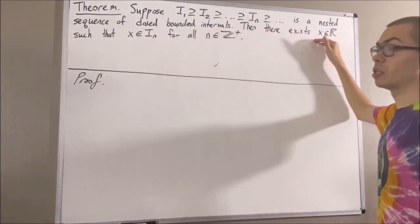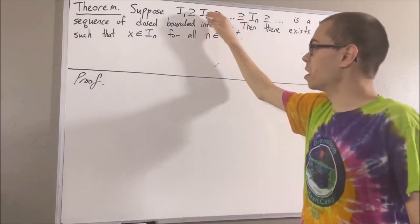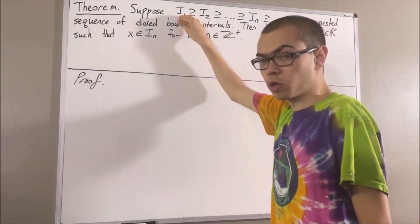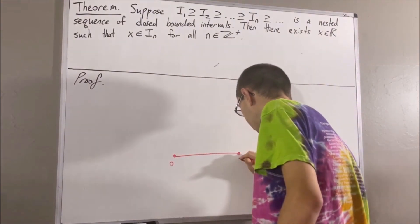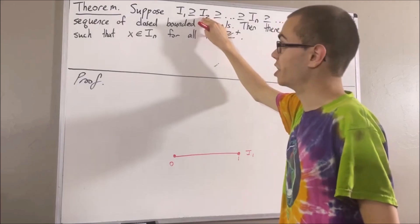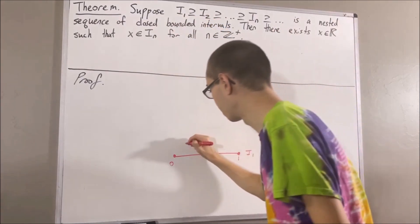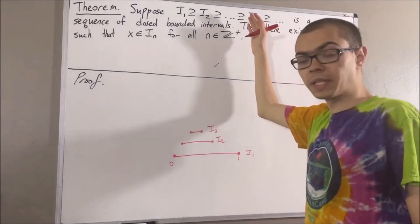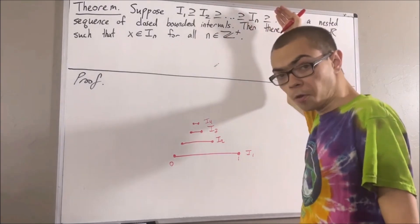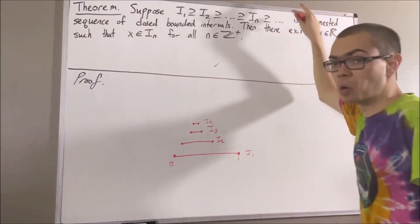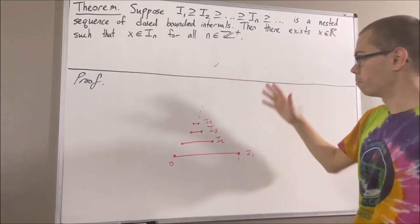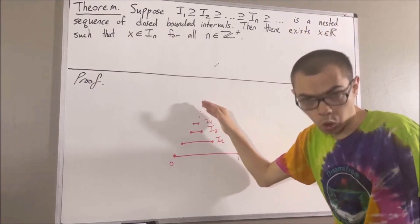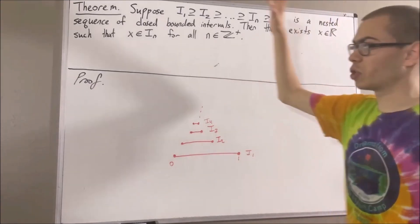Then, there exists a real number x such that x is an element of every single one of these closed bounded intervals. As you can imagine, maybe our closed bounded interval i1 is the interval from 0 to 1. Then i2 is a closed bounded interval contained in i1. i3 is a closed bounded interval contained in i2. i4 is going to be contained in i3, and so on and so forth. As you can imagine, this sequence will go on forever. But it turns out, there exists a real number that is an element of every single one of these closed bounded intervals, and that is precisely what this theorem is saying. And we're going to prove it.